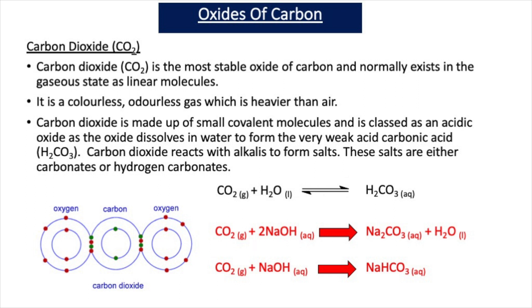Carbonic acid is classed as a weak acid because it partially splits up into H+ ions when in water. Strong acids totally split up into H+ ions, and weak acids partially split up into H+ ions when in water. Carbon dioxide is classed as an acidic oxide because it forms carbonic acid when put in water.